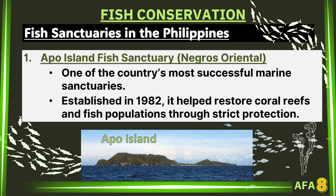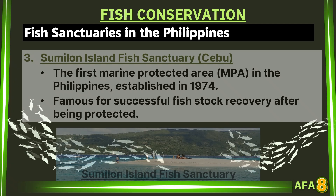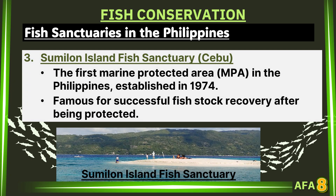The following are famous fish sanctuaries in the Philippines. The Apo Island Fish Sanctuary in Negros Oriental — one of the country's most successful marine sanctuaries, established in 1982, it helped restore coral reefs and fish populations through strict protection. The Tubbataha Reefs Natural Park in the Sulu Sea, Palawan — a UNESCO World Heritage Site, declared a no-take zone where fishing is banned, known for its rich coral reef system and diverse marine life. The Sumilon Island Fish Sanctuary in Cebu — the first marine protected area (MPA) in the Philippines, established in 1974, famous for successful fish stock recovery after being protected.